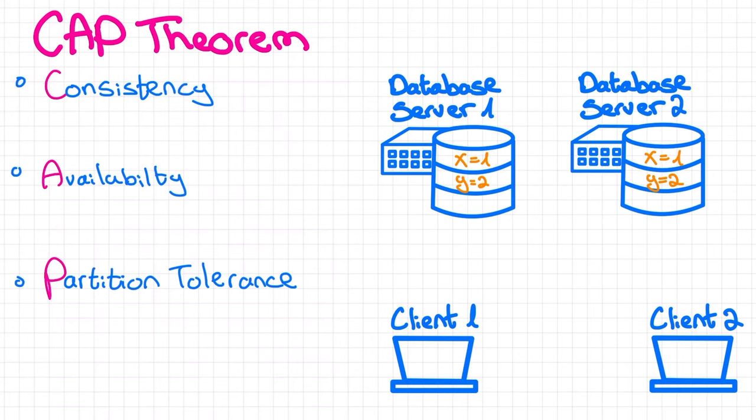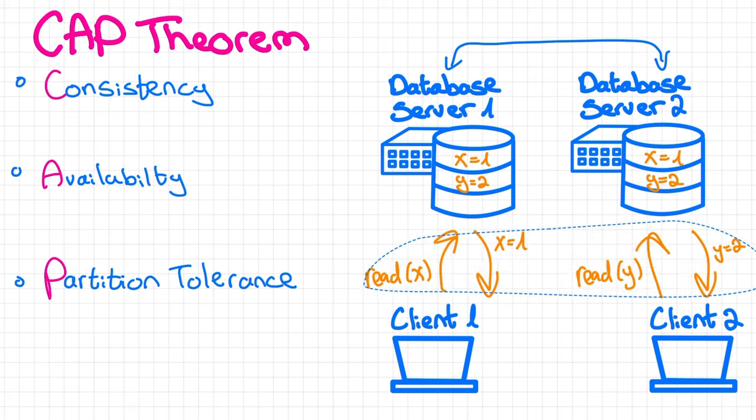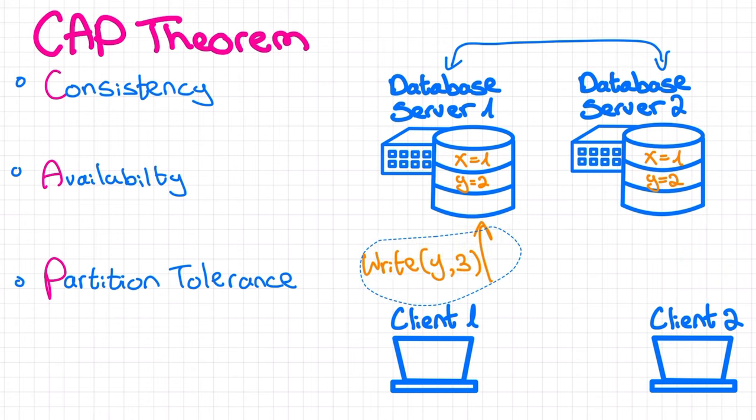Say we have these two database nodes. The two nodes contain a duplicate copy of the same data, and they communicate with each other over the network. Each node can serve read requests, and it can also serve write requests, which will then be replicated to the other node.